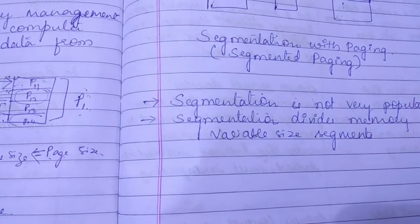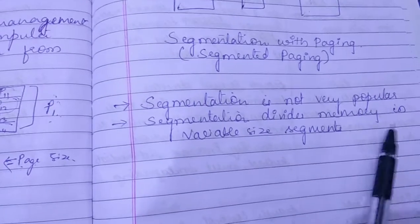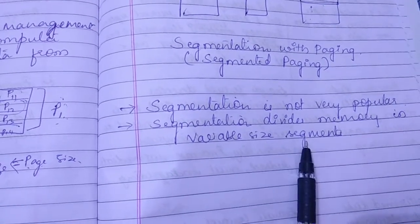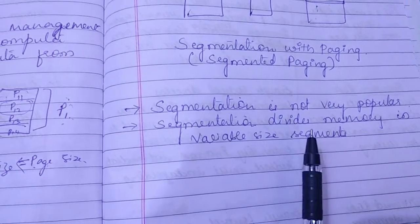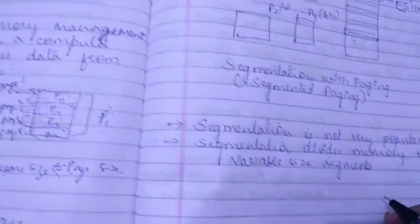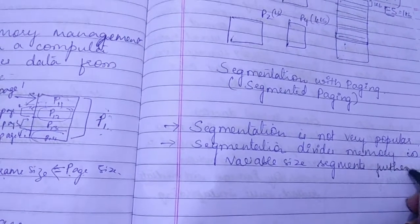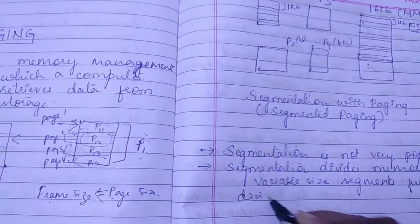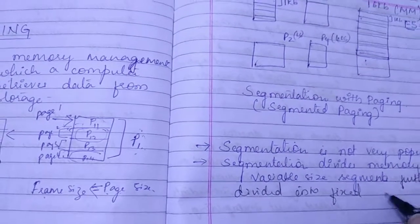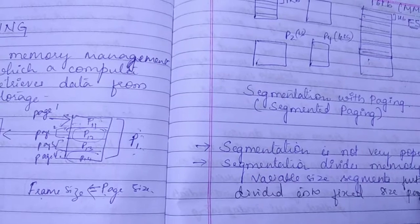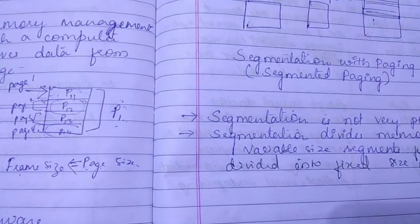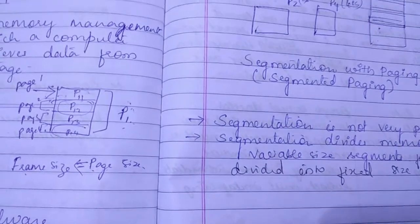In segmented paging, segmentation divides memory, the main memory into variable size segments. That is, the main memory is divided into variable size segments which are further divided into fixed sized pages. This means the main memory is first divided into segments that are of variable size, and those segments are divided into fixed pages.